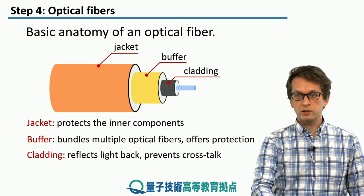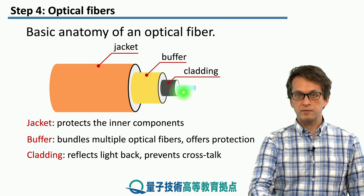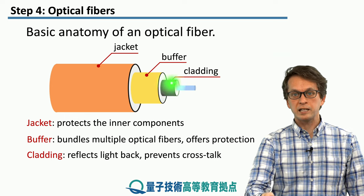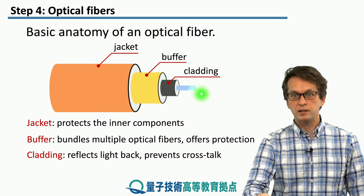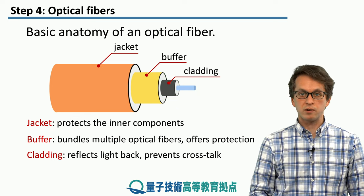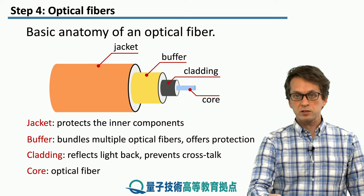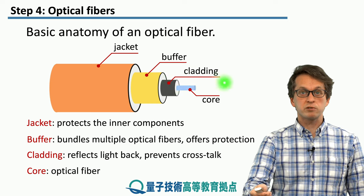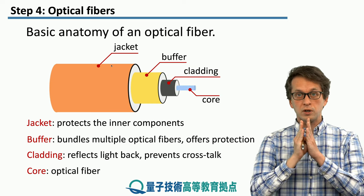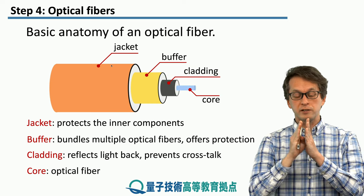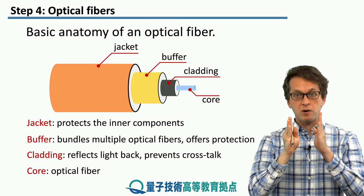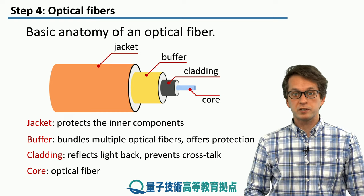Then we've got the cladding. This is the material responsible for reflecting light back and keeping it contained within the inside, which is the core. Cladding also serves as a form of protection and prevents crosstalk — because if you have two cores next to each other, light can easily escape to the other core, so you must separate them. That's the purpose of the cladding.